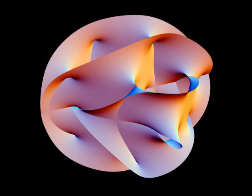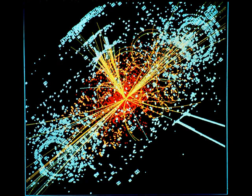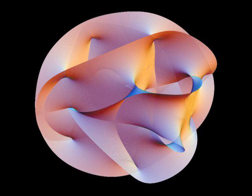String theory posits that the elementary particles, i.e., electrons and quarks within an atom, are not zero-dimensional objects but rather one-dimensional oscillating lines, strings.